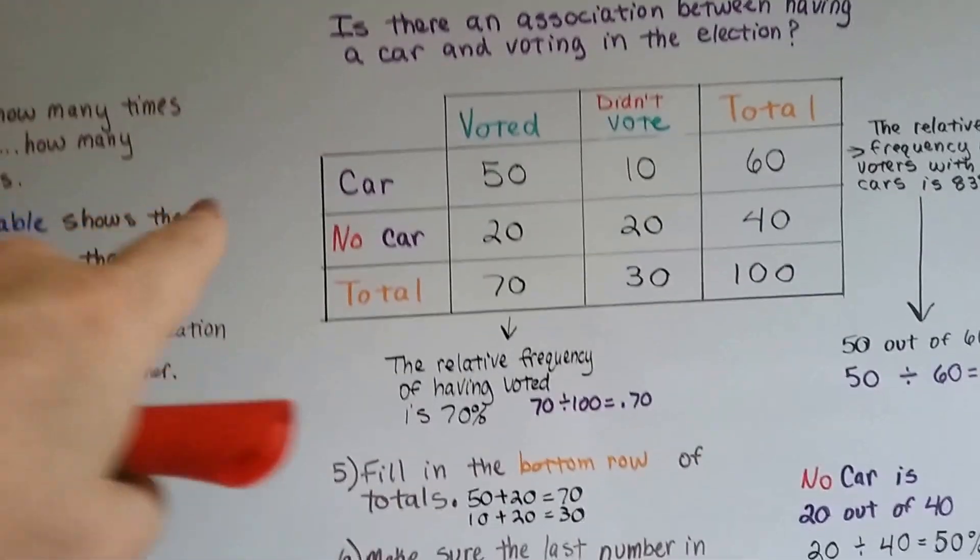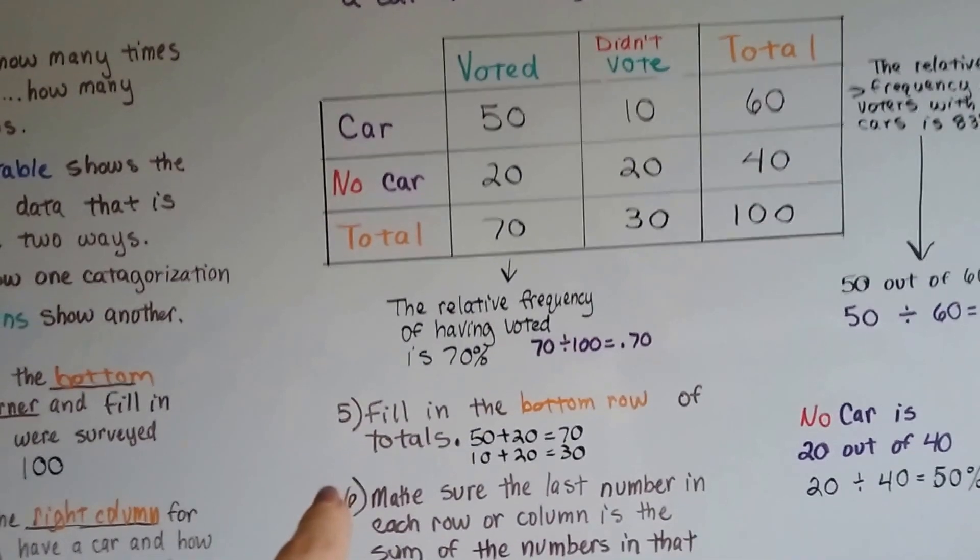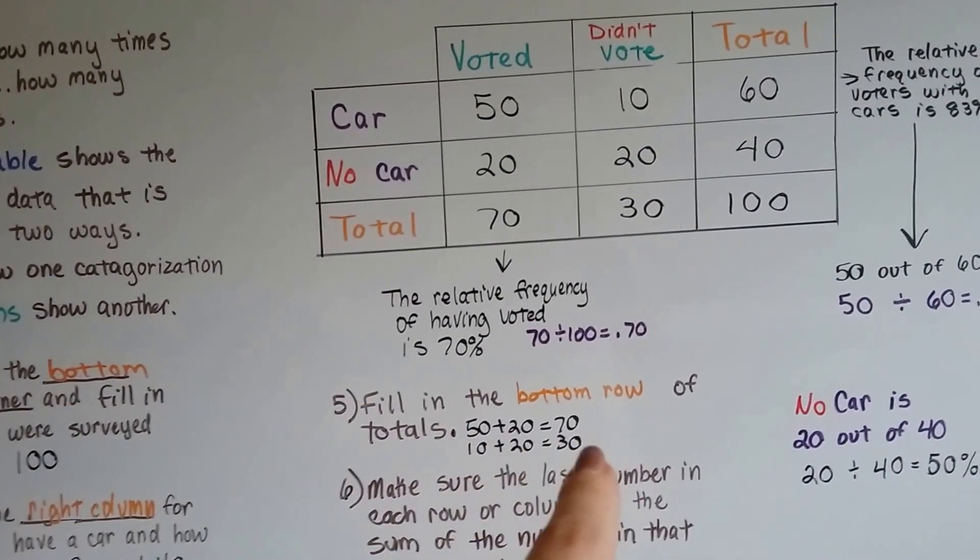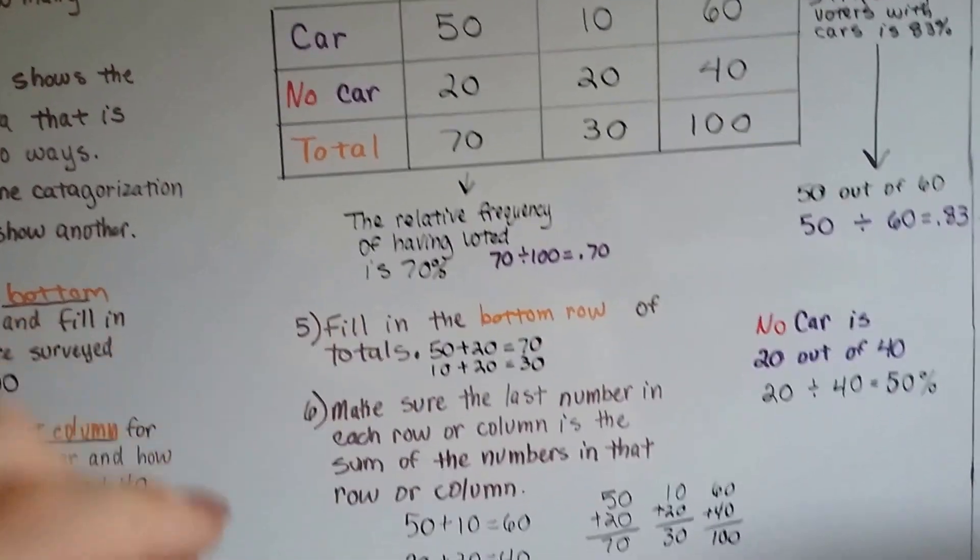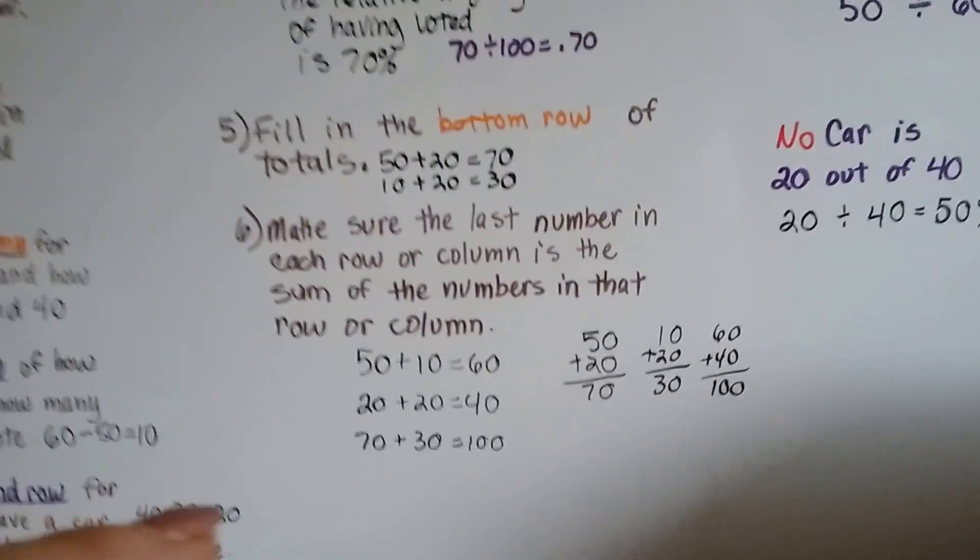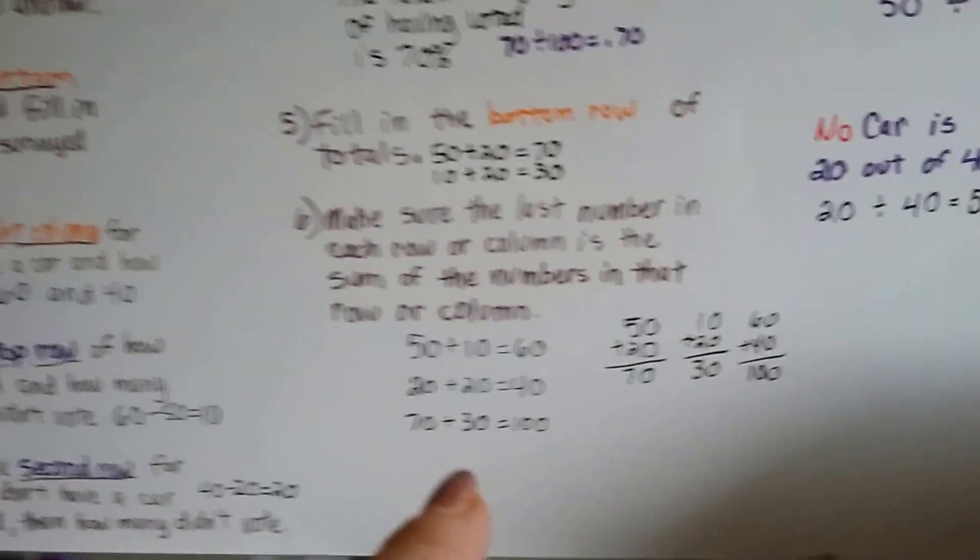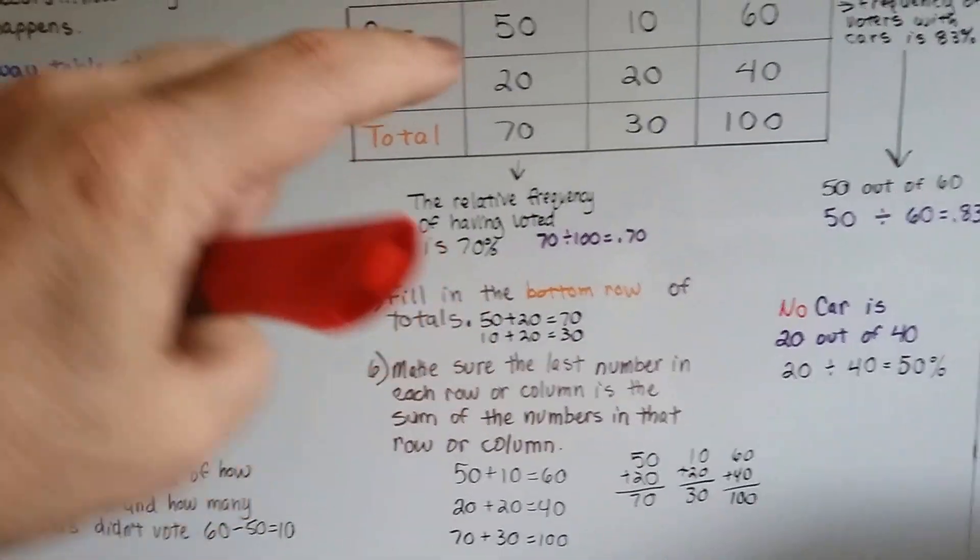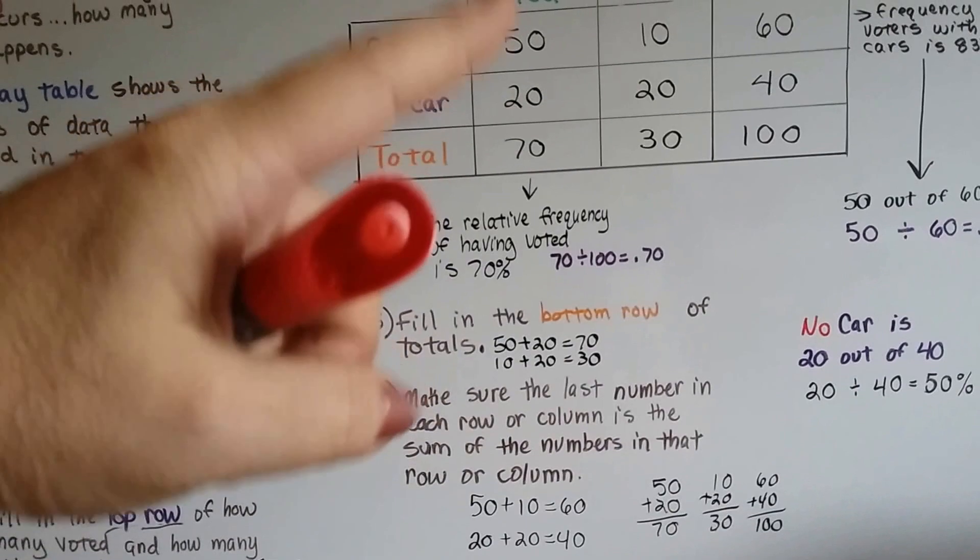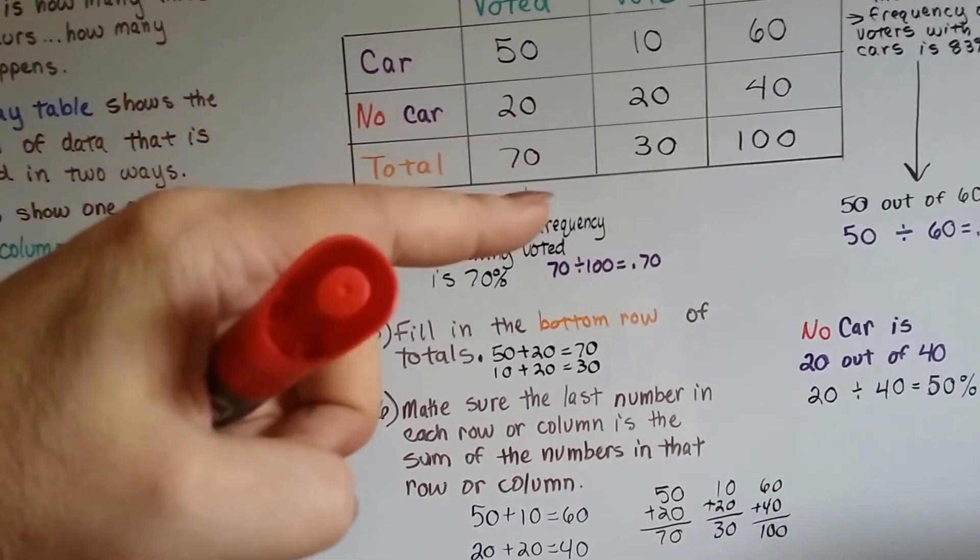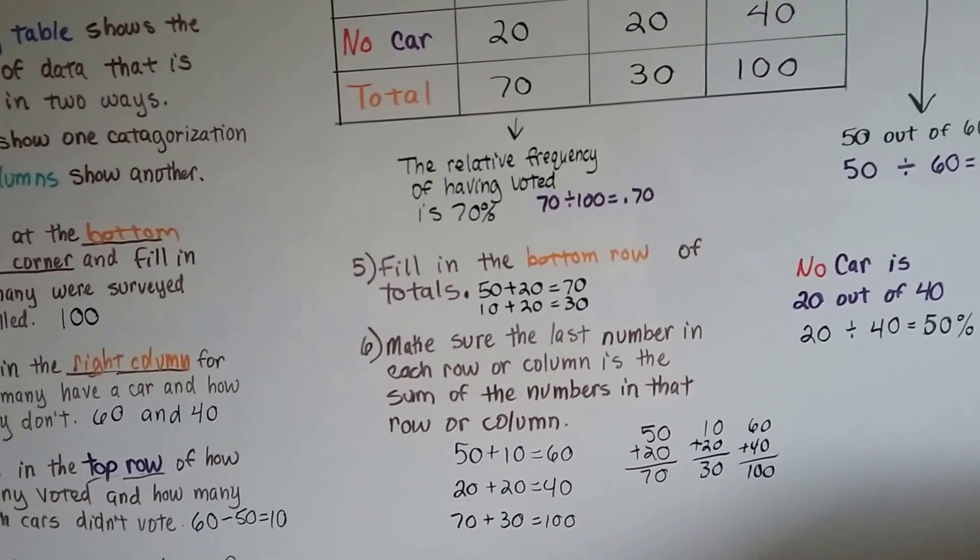Then we fill in this bottom row of totals. 50 plus 20 is 70, and 10 plus 20 is 30. We make sure that the last number in each row or column is the sum of the numbers in that row or column, so we make sure our math is correct. We've got 50 plus 10 is 60, 20 plus 20 is 40, 70 plus 30 is 100. Then we go down this way: 50 plus 20 is 70, 10 plus 20 is 30, 60 plus 40 is 100. Make sure all of our numbers are correct.